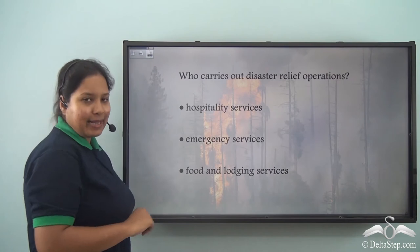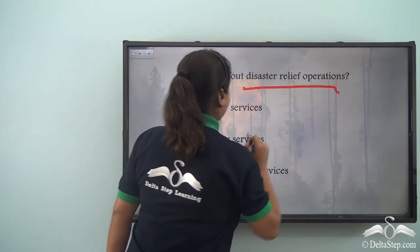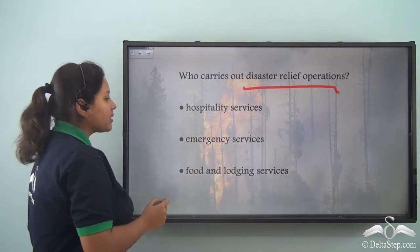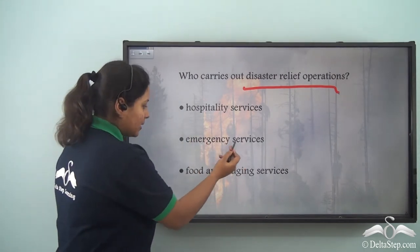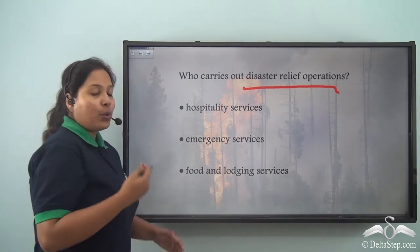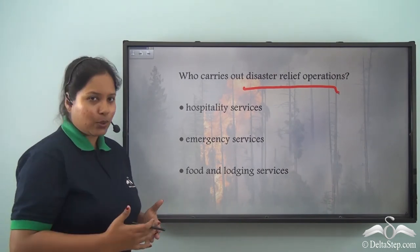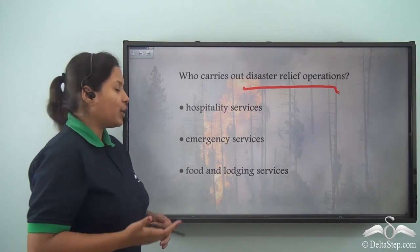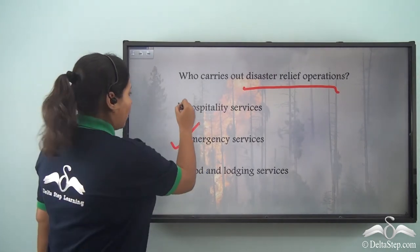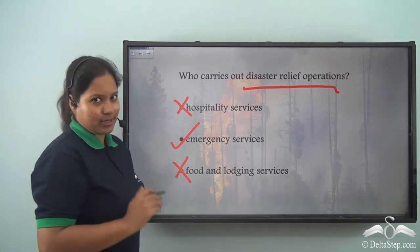Here is a question: Who carries out disaster relief operations? Option 1 — the hospitality services; Option 2 — the emergency services; or Option 3 — food and lodging services? We saw the Indian army and different NGOs coming and helping. So the correct answer is the emergency services.